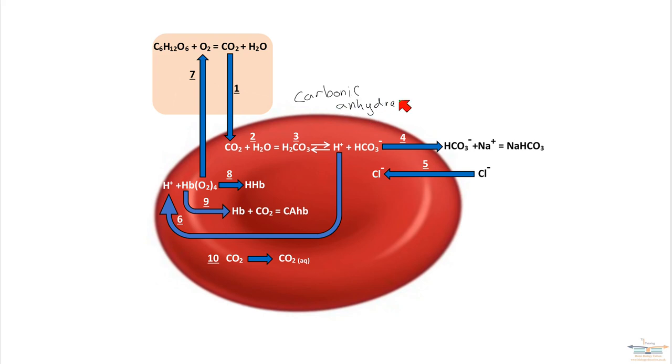Okay, so that enzyme is inside the red blood cell and it catalyzes the reaction between CO2 and water. Now what happens with this acid is that it does dissociate and it breaks up into a proton and a hydrogen carbonate ion.